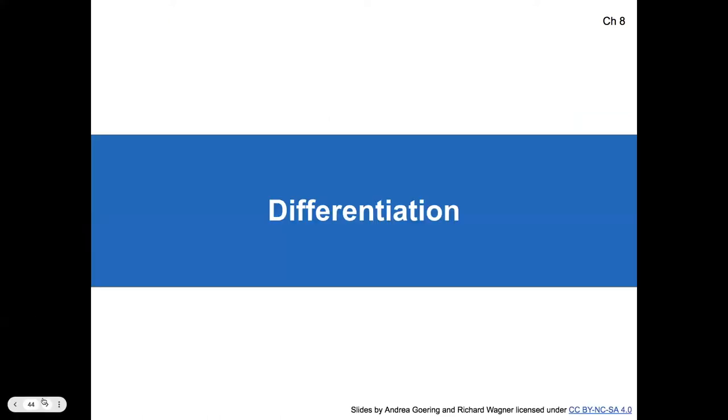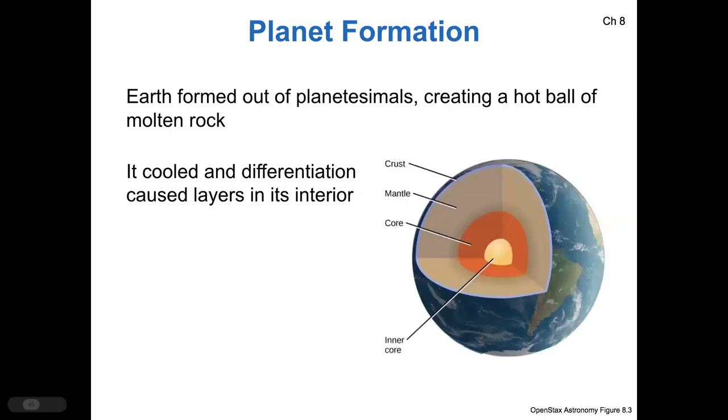All right, so when we look inside the Earth, we talked about last time that as planets formed, they were basically in an environment of constant collision early in the solar system. And so our early planetesimals were basically just hot balls of molten rock. And as the Earth cooled,